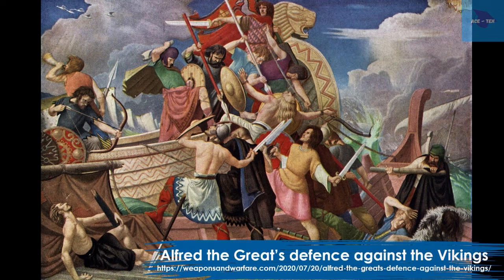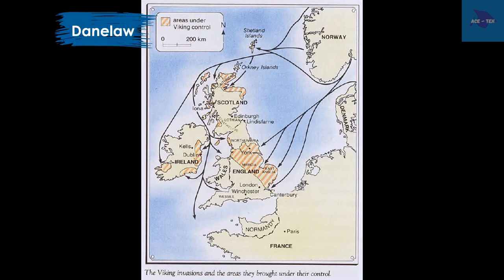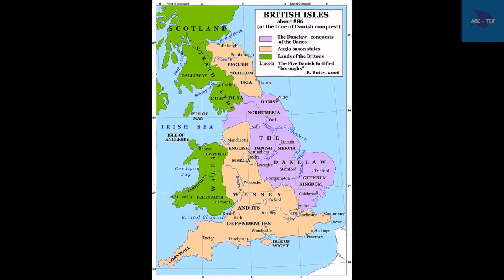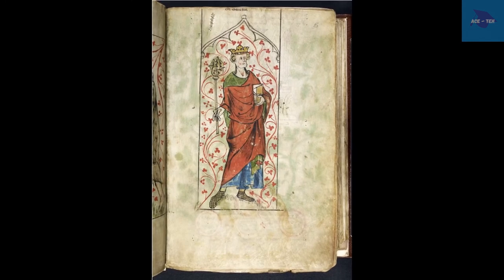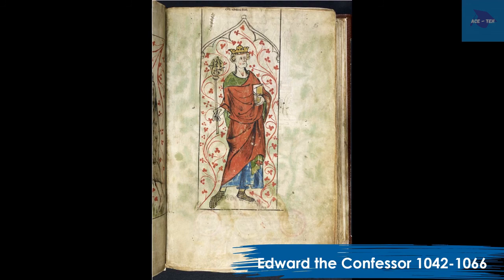Viking rule was recognized in the east and north of England. The parts of England under the Vikings were called the Danelaw. After the death of Alfred the Great in AD 899, Wessex became weak. Gradually, the Anglo-Saxons were crushed. The last great Saxon king was Edward the Confessor, who ruled till 1066. The Anglo-Saxon history stops here — this was a brief history of the Old English period.